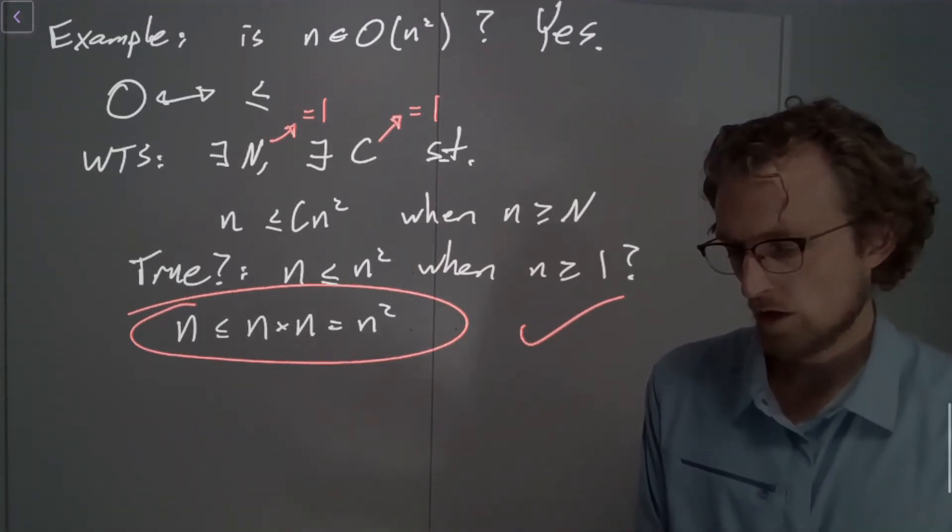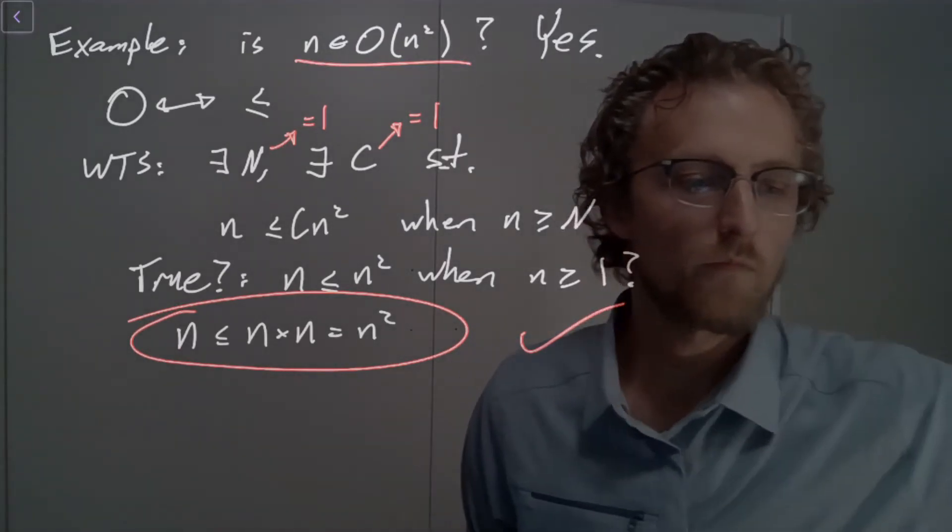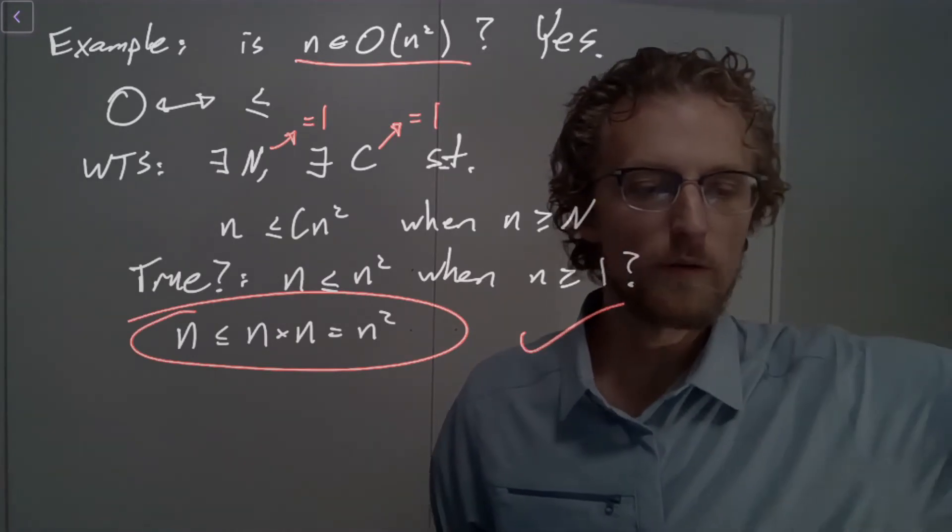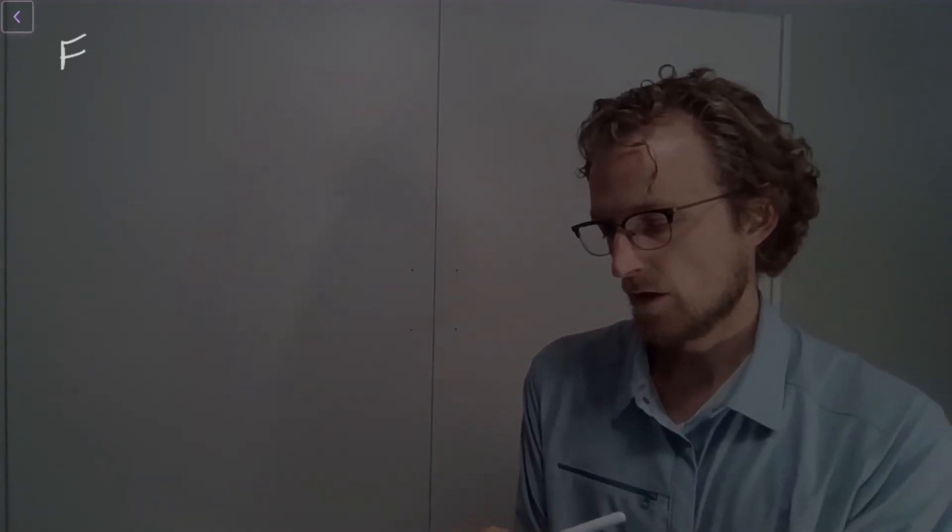We just showed that n is big O of n squared. So now let's do another simple one. So let's do the following. This one does not appear in the typeset notes. So here's another example.